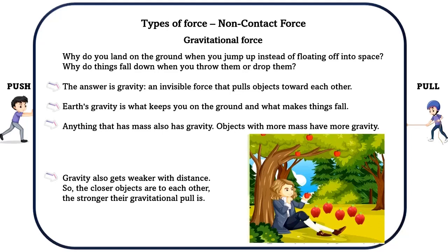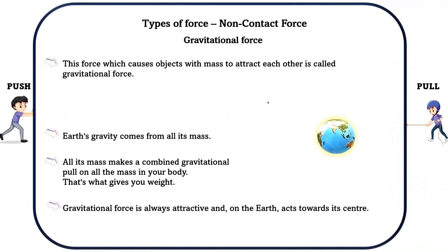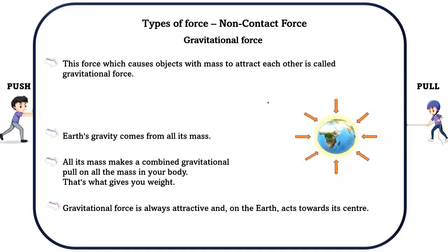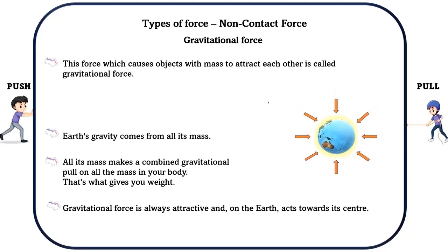Gravity also gets weaker with distance. So the closer objects are to each other, the stronger their gravitational pull is. This force which causes objects with mass to attract each other is called gravitational force. Gravitational force is always attractive and on the earth acts towards its center. Earth's gravity comes from all its mass, making a combined gravitational pull on all the mass in your body — that's what gives you weight. If you were on a planet with less mass than the earth, you would weigh less than you do here.